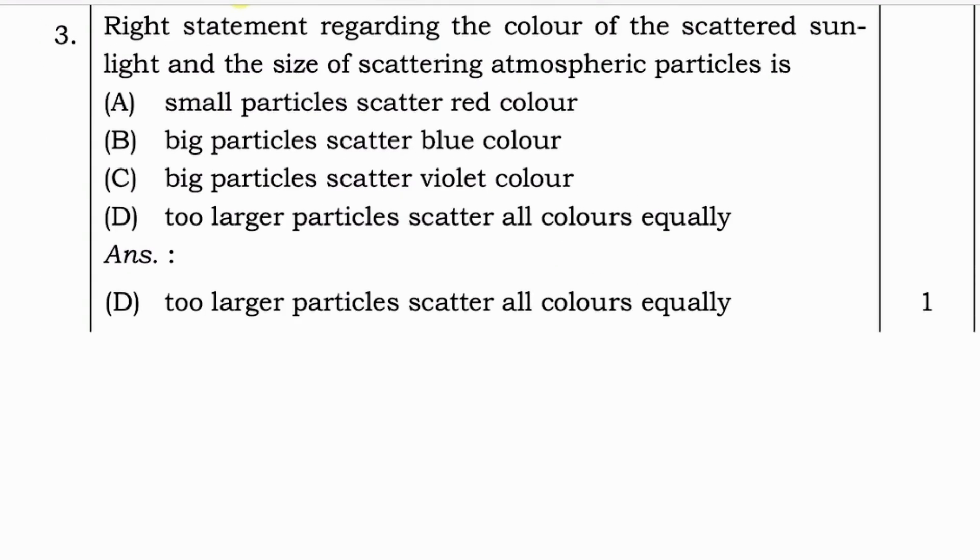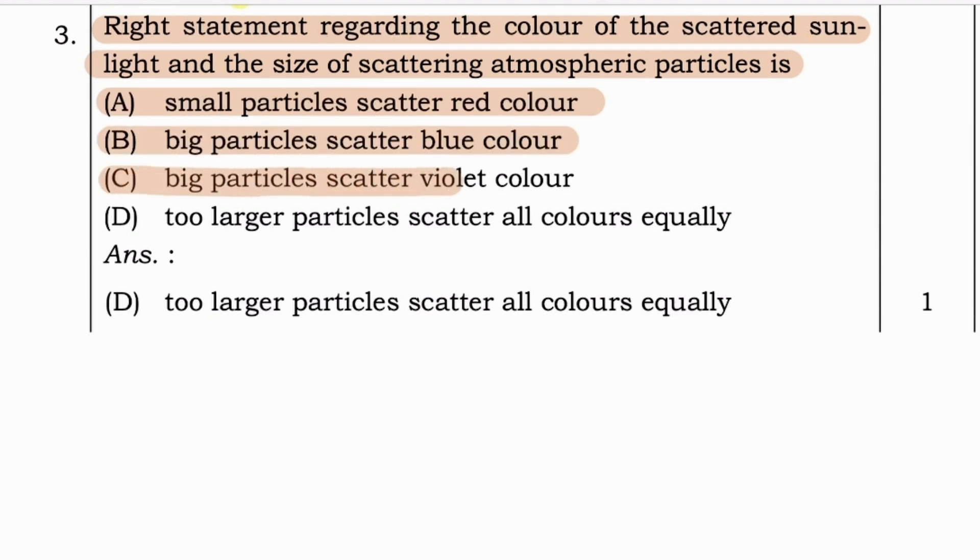Now let's go to next question. Write statements regarding the color of the scattered sunlight and the size of scattering atmospheric particles is. Small particles scatter red color, big particles scatter blue color, big particles scatter violet color, and too larger particles scatter all colors equally. Answer for this question is option D, too larger particles scatter all colors equally.